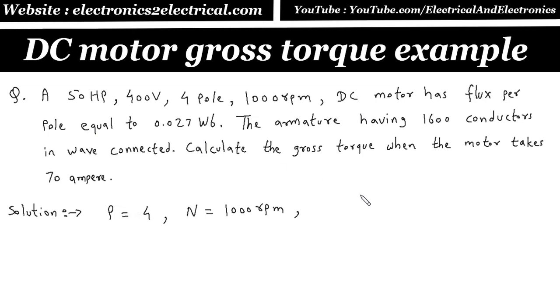Flux per pole, phi, is equal to 0.027 Weber. Number of conductors Z is equal to 1600 in wave connected. So for wave connected, A is 2.